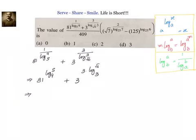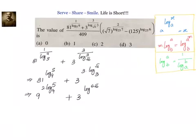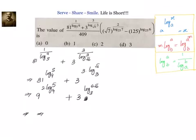That is equal to — can we write 81 as 9²? So it will become 9 to the power of 2 into log₅ to base 9, plus 3 to the power of log(√6) whole cube, which can be written as log(√6) to base 3. Now we apply the property: a to the power of log_a(x) equals x. We see here 9 and 9 are the same, and 3 and 3 are the same.